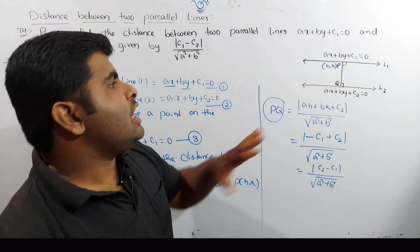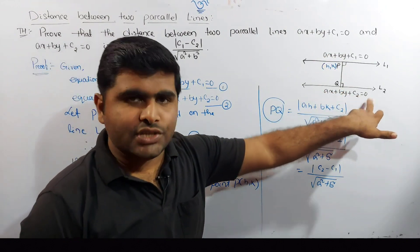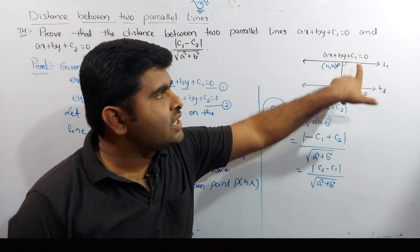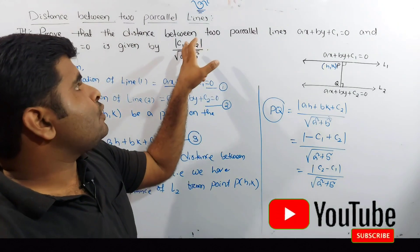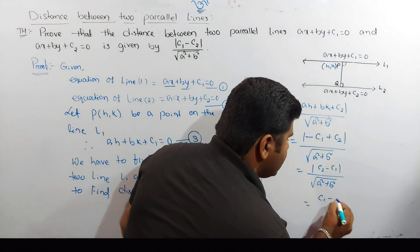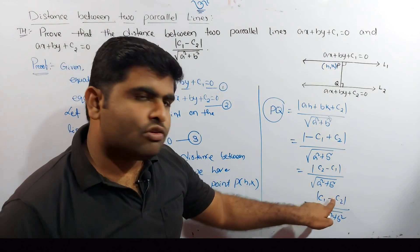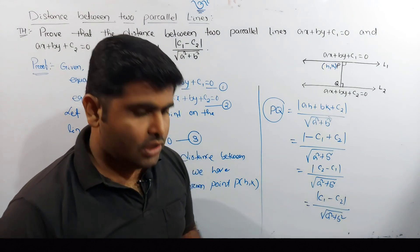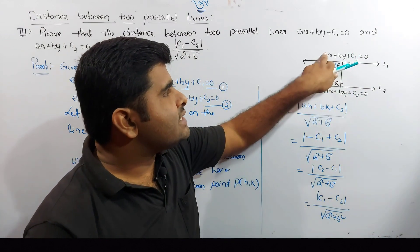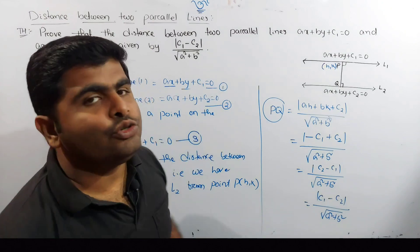So the distance formula gives us: if the first line is ax + by + c1 = 0 and the second line is ax + by + c2 = 0, then the distance between the two lines is |c1 − c2| divided by √(a² + b²). This is the distance between two straight lines.